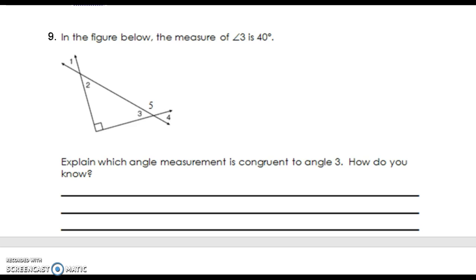In the figure below, the measure of angle 3 is 40. Explain which measurement is congruent to angle 3. Angle 3 is vertical with angle 4, so angle 4 is also 40 degrees. They are congruent.